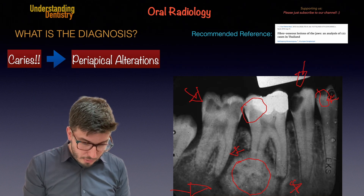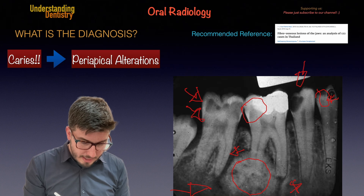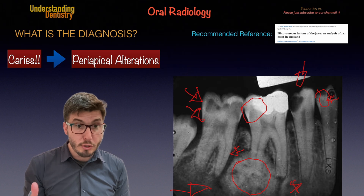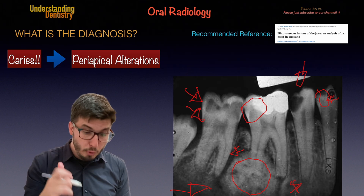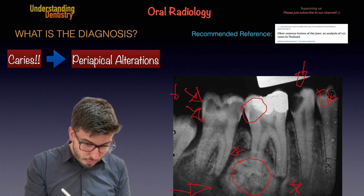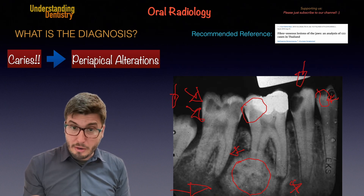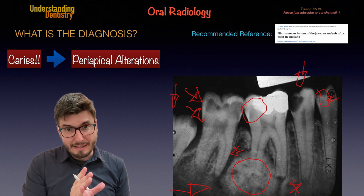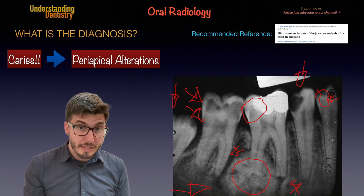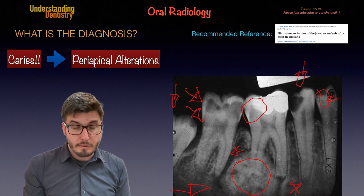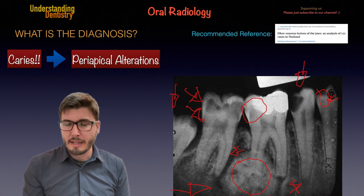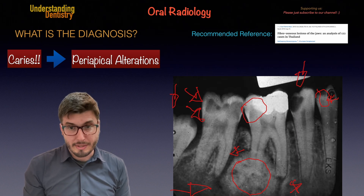Even interproximal distal caries here — related to the fact that the third molar is vertically impacted. The third molar also has occlusal caries, and the third molar is in contact with the CEJ of the second molar. Probably this was very close and there was food packing, and this was most likely the cause of this distal caries.